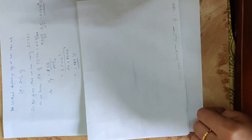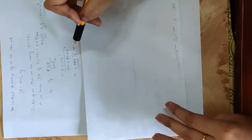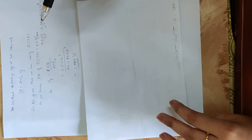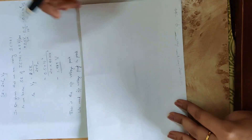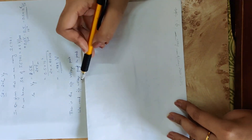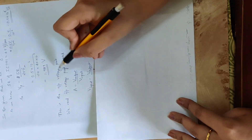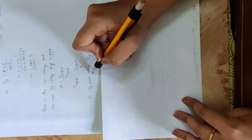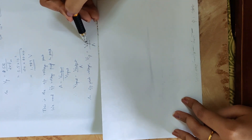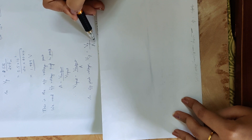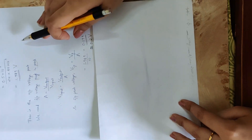We need the input peak-to-peak voltage. From the slew rate equation, we get the output peak voltage. Then the input peak voltage equals the output peak voltage divided by the gain, because gain equals output divided by input. Now let's substitute the values.